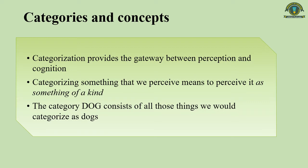Categorization works as the gateway between perception and our coordination. Categorizing something that we perceive means to perceive it as something of a kind. If we look at a photograph of a person, we will recognize it and categorize it as an object of the kind photograph that displays something of the kind person. We recognize that person and categorize him or her as that particular person. In the whole process, we assign everything that enters our mind to one or more categories.